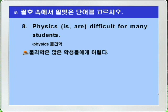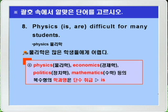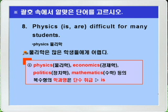Question 8: 'Physics is/are difficult for many students.' Academic subject names ending in -ics, such as physics (물리학), economics (경제학), politics (정치학), and mathematics (수학), are plural in form but treated as singular. Therefore 'is' is the correct answer. Answer: Physics is difficult for many students.